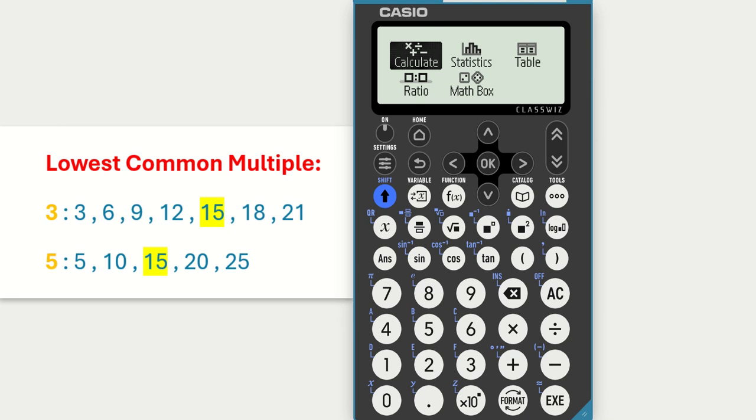3, 6, 9, 12, 15, 18, 21 are the multiples of 3. And I've listed out some multiples of 5, 10, 15, 20, 25. So I've highlighted in yellow that the lowest common multiple of 3 and 5 is 15.